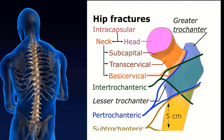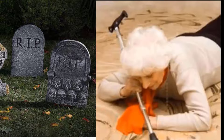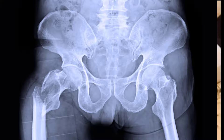The two areas we look at are the vertebra, or skeletal spine, and the hip. We look at these areas because they give us different types of information. For instance, one in three adults age 50 and over dies within 12 months of suffering a hip fracture. Older adults have a five to eight times higher risk of dying within the first three months of a hip fracture compared to those of the same age without a hip fracture. The increased risk for death after a fracture remains elevated for at least 10 years post fracture.